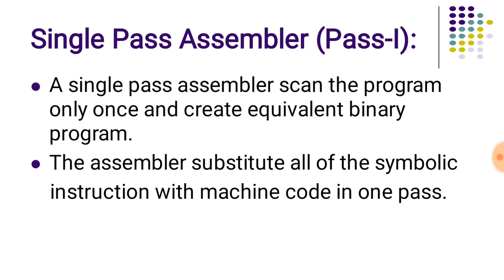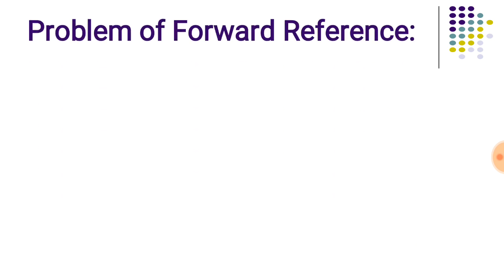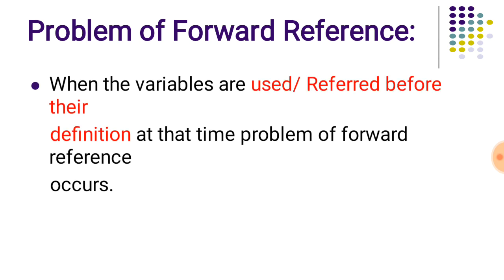Now we will see what is meant by a single pass assembler. The single pass assembler scans the program only once and creates its equivalent binary program. The assembler substitutes all the symbolic instructions with their machine code and addresses in one pass, so it is referred to as a single pass assembler or pass one assembler. However, a single pass assembler always suffers from the forward reference problem.